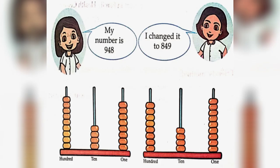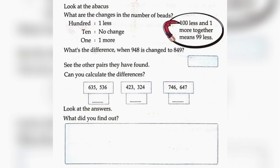My number is 948. I changed it to 849. Look at the abacus. What are the changes in the number of beats? 100, 1 less. 10, no change. 1, one more. What's the difference? When 948 is changed to 849. So, 948 minus 849 is equal to 99.